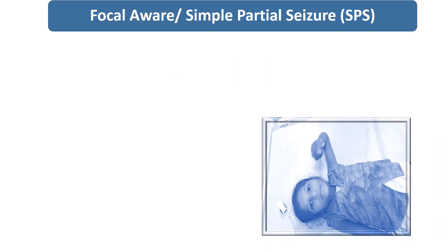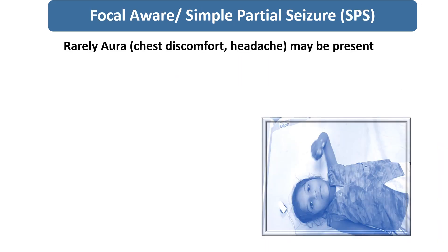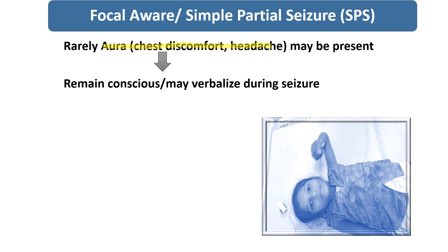In focal aware seizures, the child may have an aura, which is present in 70% of cases, in the form of chest discomfort, headache, or sometimes epigastric pain. Before the convulsion starts, the child will have the symptoms of the aura, followed by the seizure.